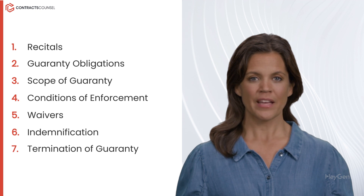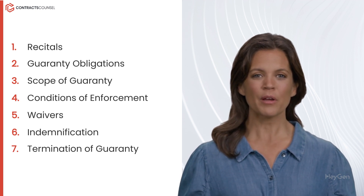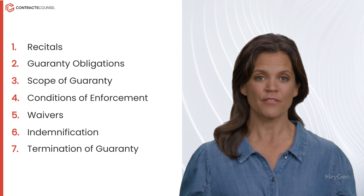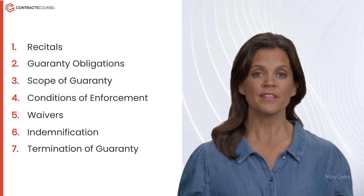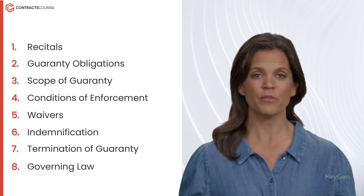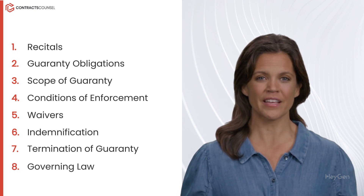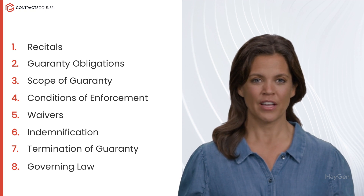Seven, termination of guarantee describes the conditions under which the guarantee agreement will end, such as repayment of the loan or expiration of the specified term. Eight, governing law specifies the state laws governing the agreement to ensure legal clarity.